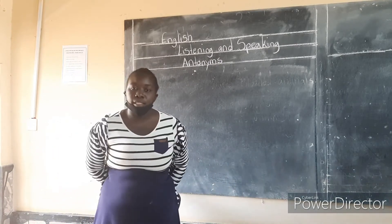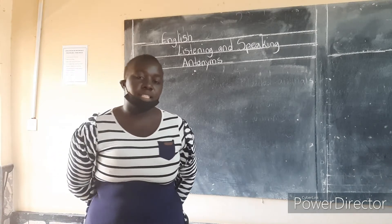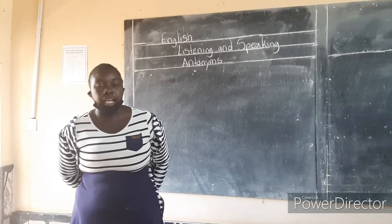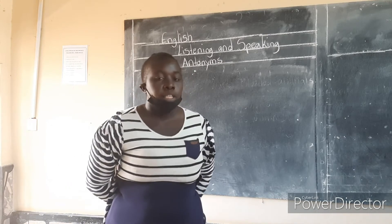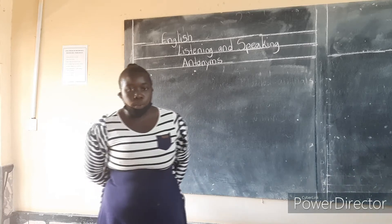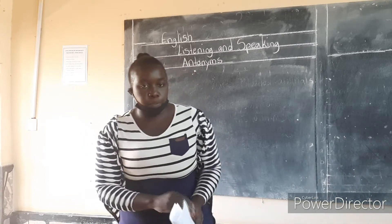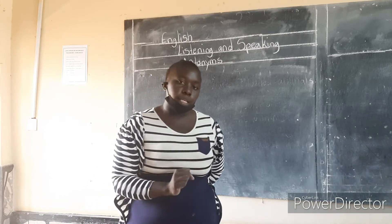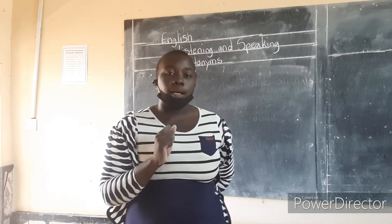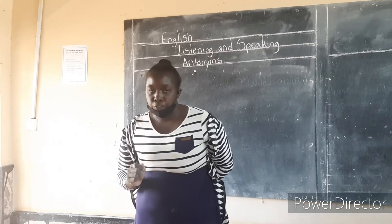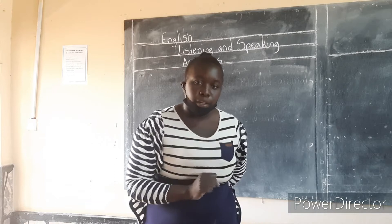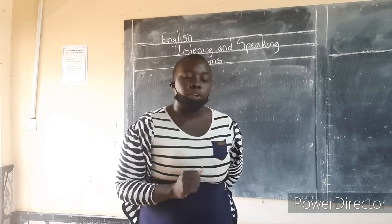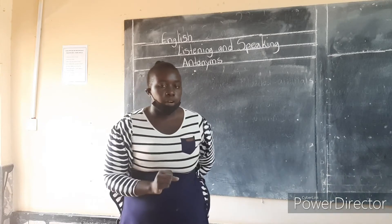Last week, we were looking at the alphabet, where we saw different symbols used in the alphabet. We said an alphabet has 26 symbols. We also said that an alphabet has two different types of symbols: small letters and capital letters. We also looked at vowels and the consonants that are in the alphabet.